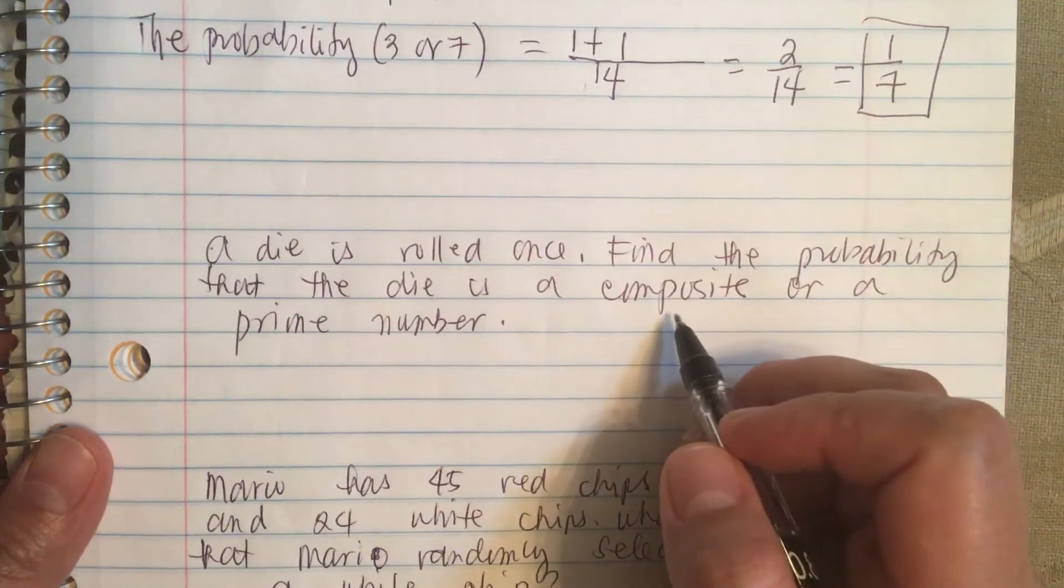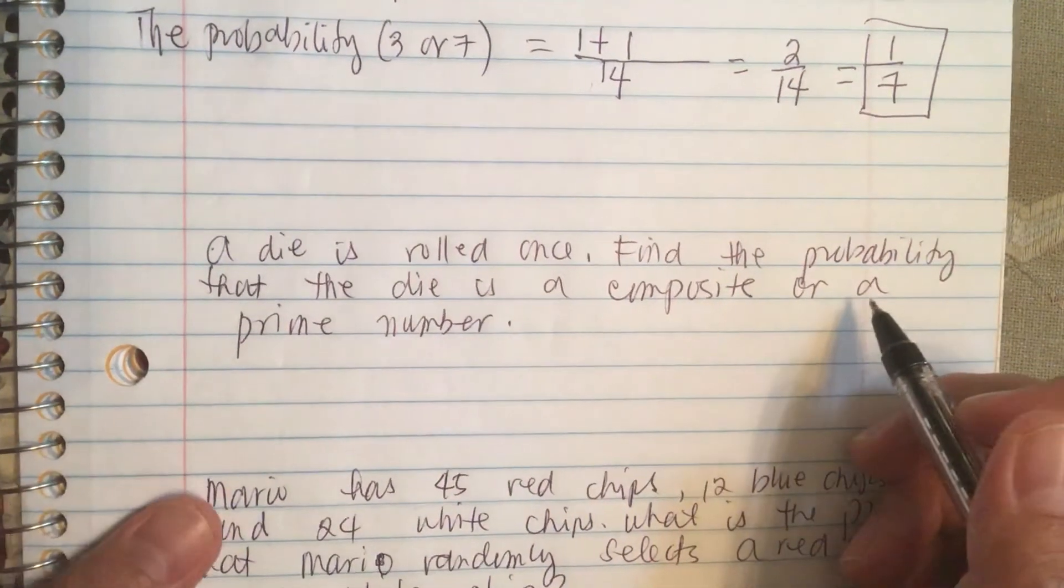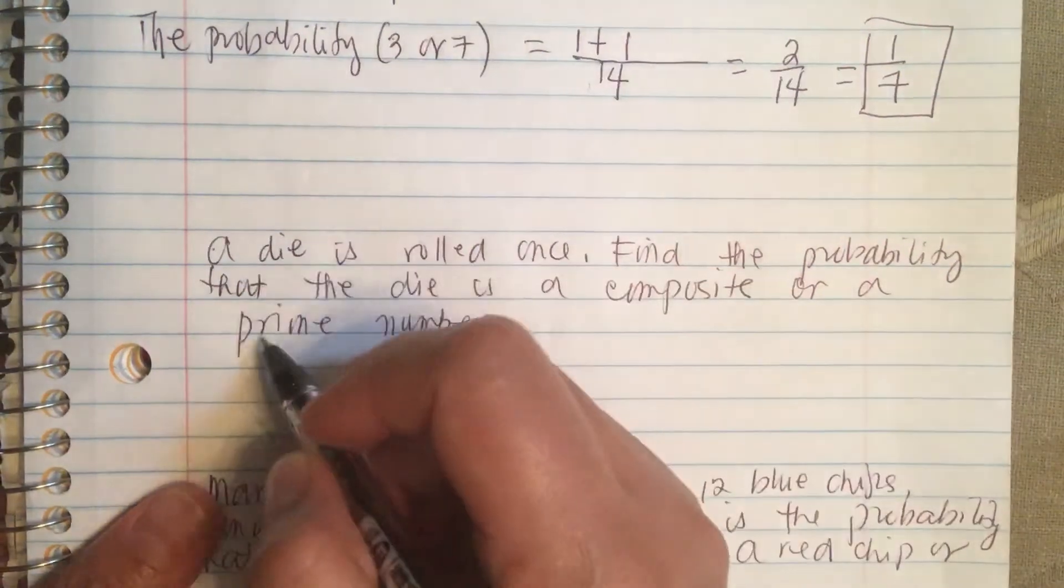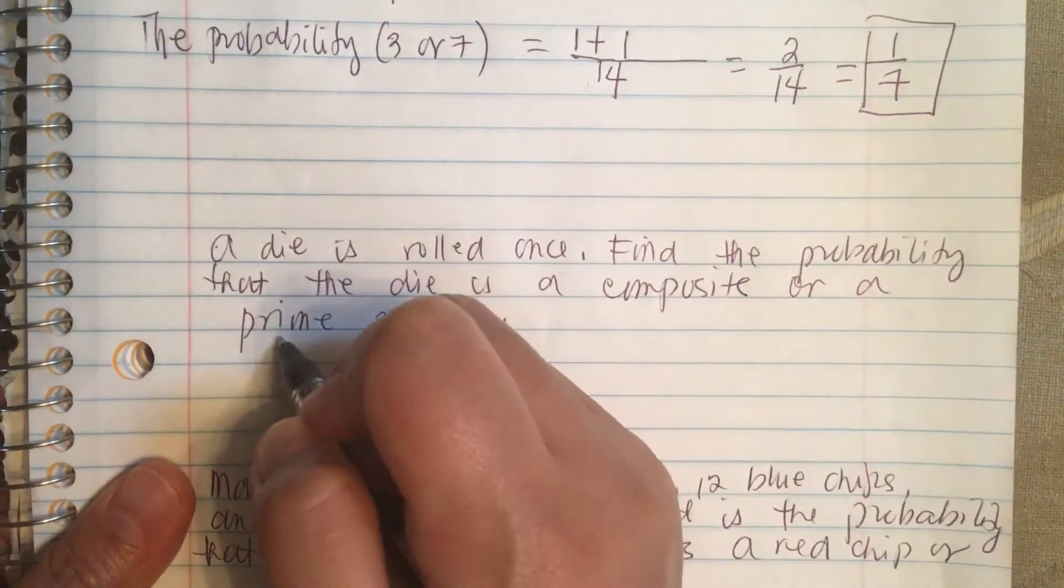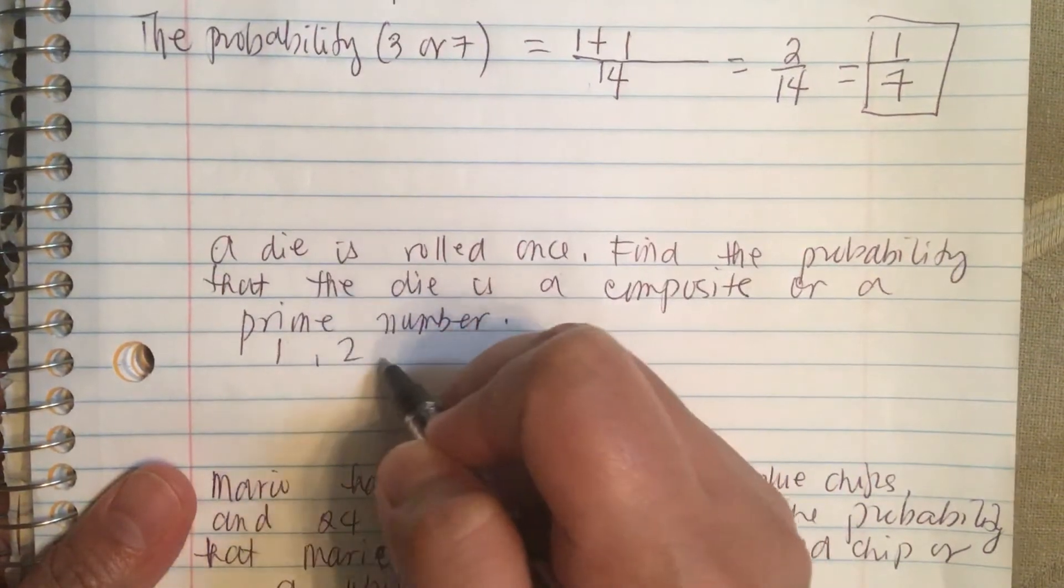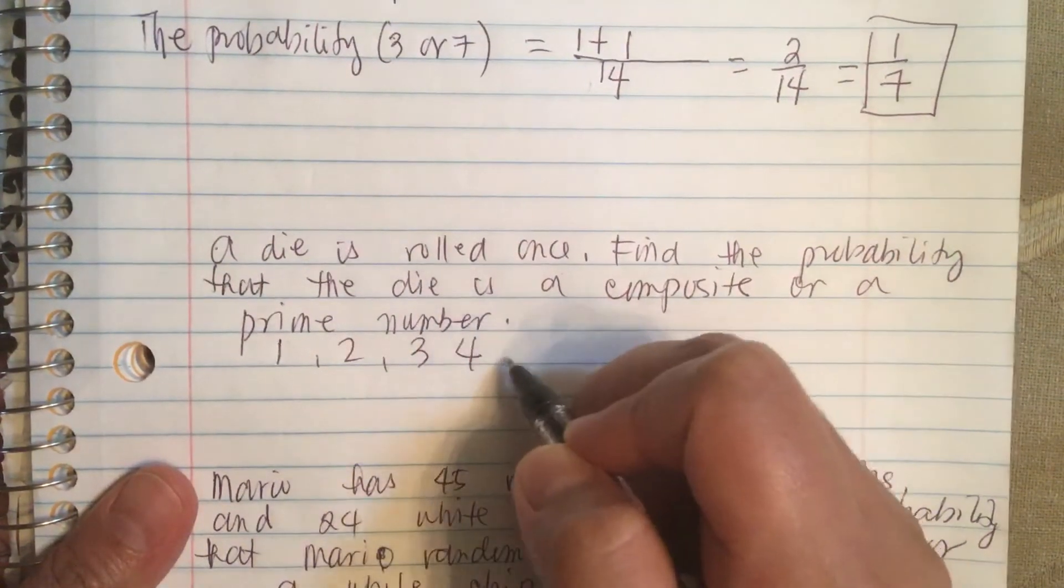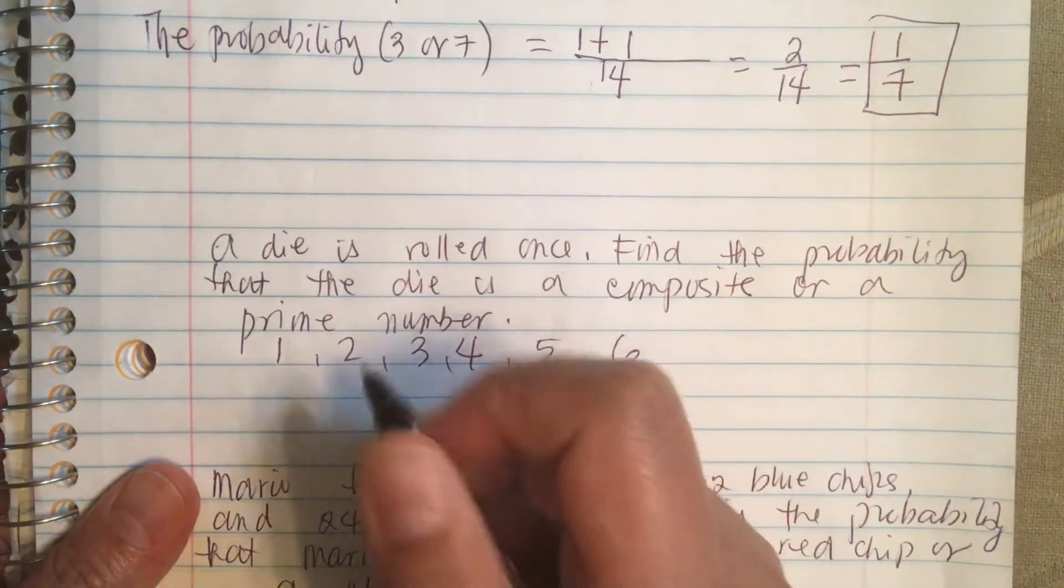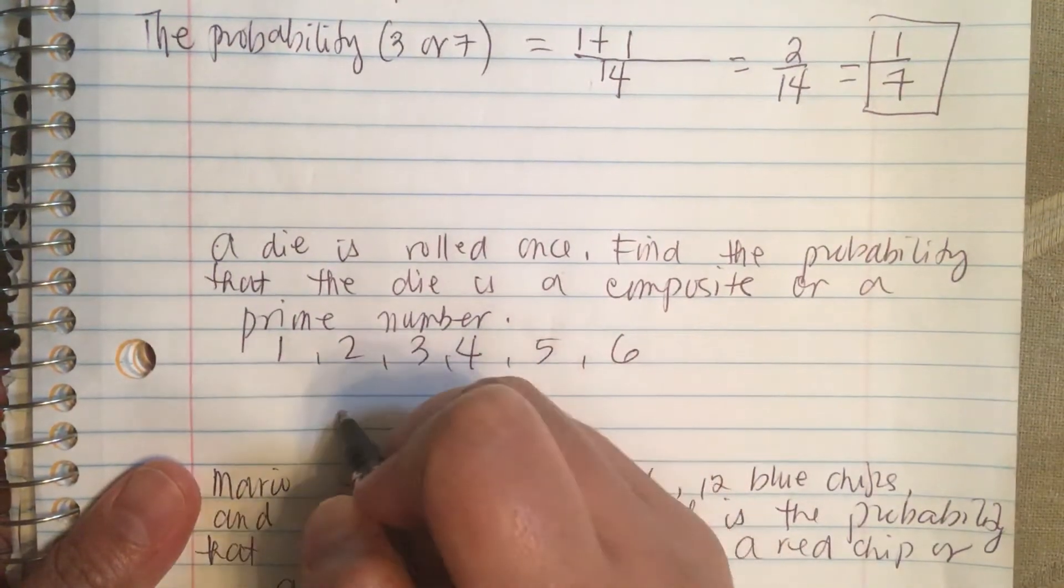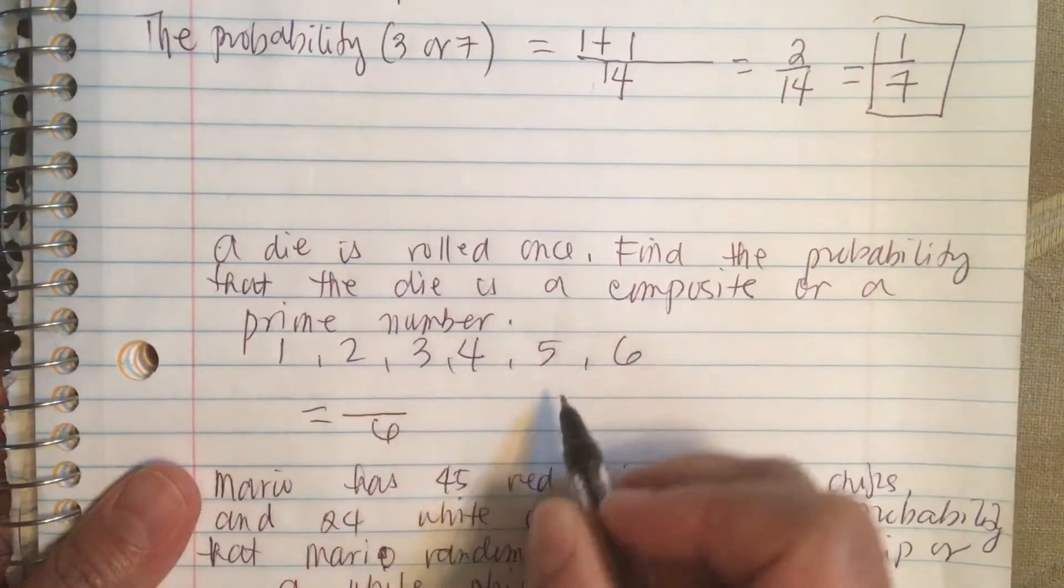A die is rolled once. Find the probability that the die is a composite or a prime number. So the die has six sides: one, two, three, four, five and six. So on the bottom gonna be the total number of cases which is six.